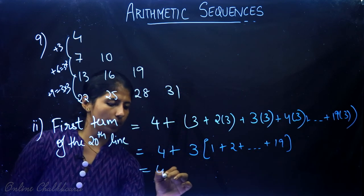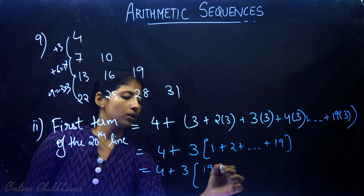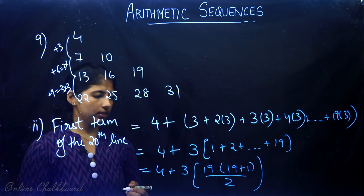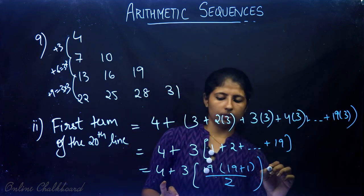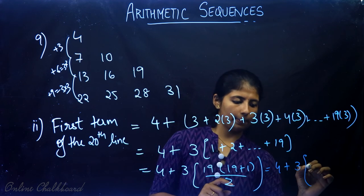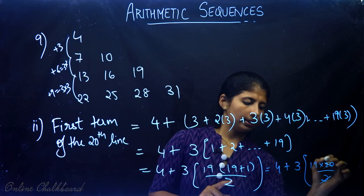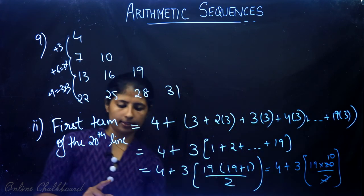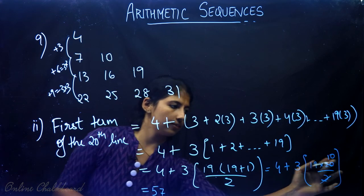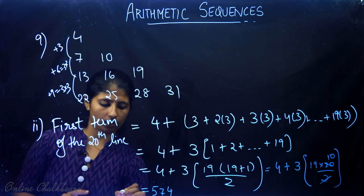So the first term of the 20th line is 574. The 20th line has 20 terms with common difference 3. The last term equals first term plus (n minus 1) times common difference, that is 574 plus 19 times 3 equals 574 plus 57 equals 631. The last term of the 20th line is 631.